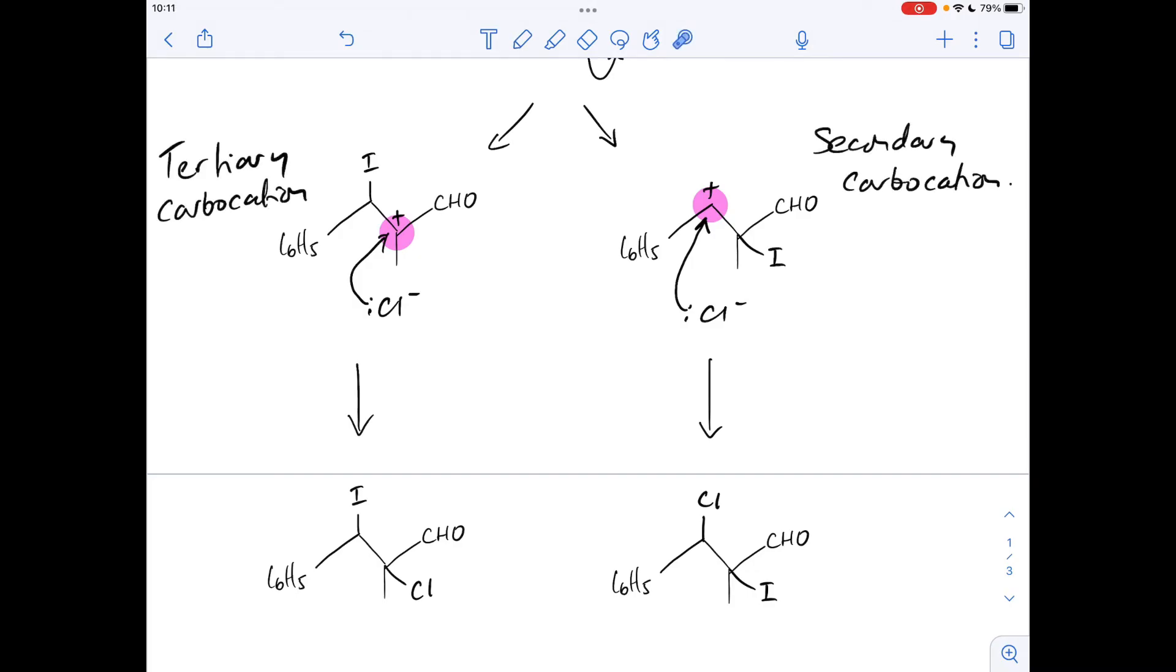So in terms of relative stability, the tertiary carbocation is more stable than the secondary carbocation, and so therefore we're going to get more of this forming than this one, and so therefore this is the product that's formed most.